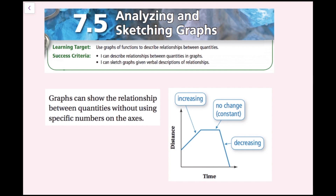Graphs can show the relationship between quantities without using specific numbers on the axis. So if I have a distance versus time graph, a positive slope means the distance is increasing. If it stays flat and horizontal, there's no change — it's constant. And if the slope is negative, the value of the distance over time is decreasing.